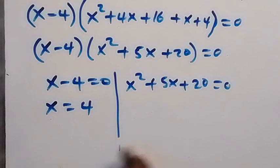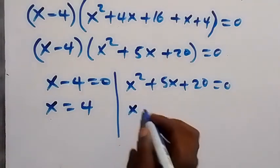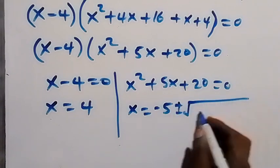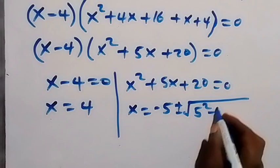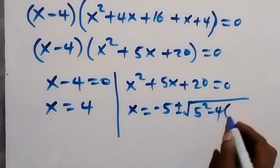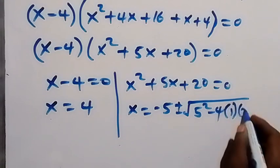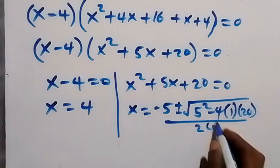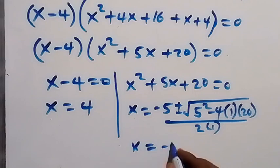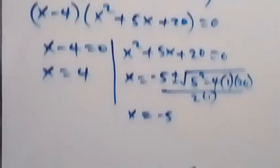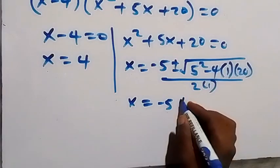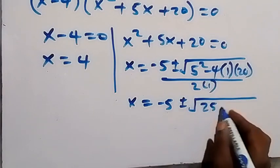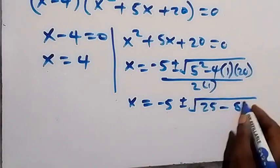For the quadratic x² + 5x + 20 = 0, we apply the quadratic formula: x = (−b ± √(b² − 4ac)) / 2a, where b = 5, a = 1, c = 20. This gives x = (−5 ± √(25 − 80)) / 2.